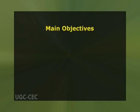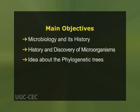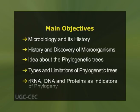Let us first look at the main objectives of today's deliberation: to give a general and thorough idea about microbiology and its history; to discuss in detail the history and discovery of microorganisms; to give a general idea about phylogenetic trees; to discuss the role, types and limitations of phylogenetic trees; and finally, learning about rRNA, DNA and proteins as indicators of phylogeny.